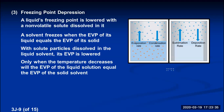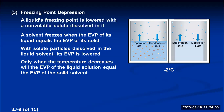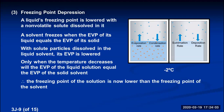Watch what happens as we lower the temperature. If you lower the temperature, you lower the vapor pressures of both the solid and the liquid solution. At negative one degree, they're not quite the same yet. Lower it down to negative two — vapor pressures decrease for both, and now they're the same. So negative two degrees is the new freezing point of the solution. Therefore, the freezing point of the solution is now lower than the freezing point of the solvent.